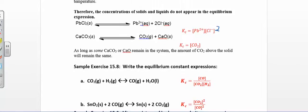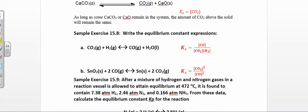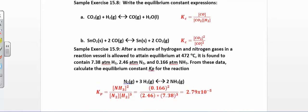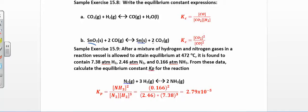Here are some more examples — try to work these out and then check your answers. In this first one you have a liquid, so you don't include the liquid; you include everything but the liquid. It's still products over reactants raised to their stoichiometric coefficients. Over here you have solids, so don't put those solids in. It's just products squared over reactants squared — don't forget your stoichiometric coefficients.